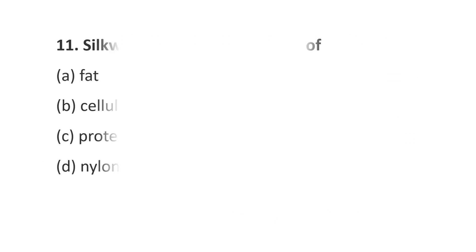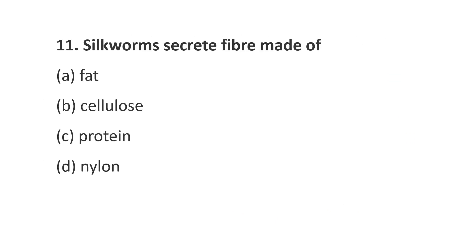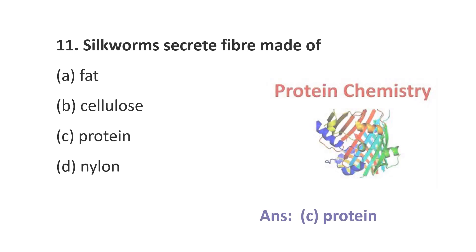Question number 11. Silkworms secrete fiber made of: Option A, Fat; Option B, Cellulose; Option C, Protein; Option D, Nylon. The answer is Option C, Protein. So, silkworms secrete fiber made of protein.